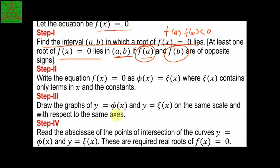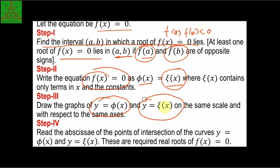Once we get the interval [a, b], we separate f(x) = 0 into two functions φ(x) and ξ(x), where each contains certain terms of x and constants. We then draw two graphs: y = φ(x) and y = ξ(x). Whatever the intersection point of these two graphs, that intersection is the root of the equation f(x) = 0. This is the graphical method.